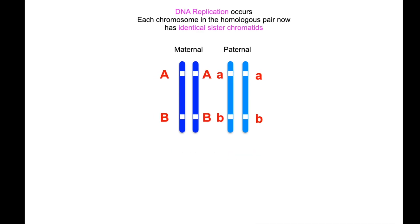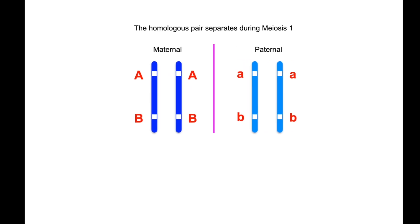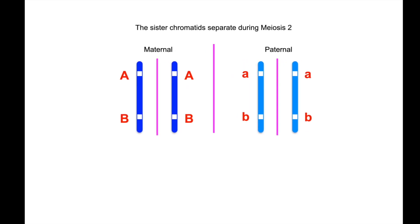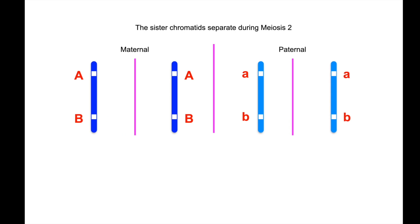So when we go through normal meiosis, DNA replication occurs during the synthesis phase prior to cell division. Each chromosome in the homologous pair now has identical sister chromatids. So the homologous pair separates during meiosis 1, and then the sister chromatids separate during meiosis 2.